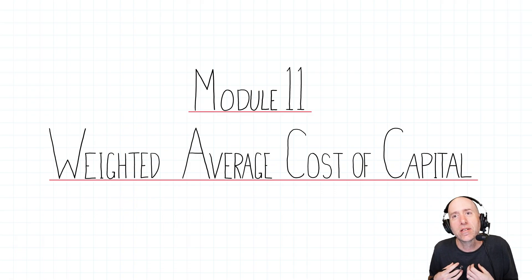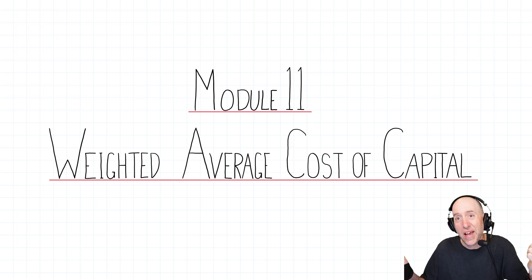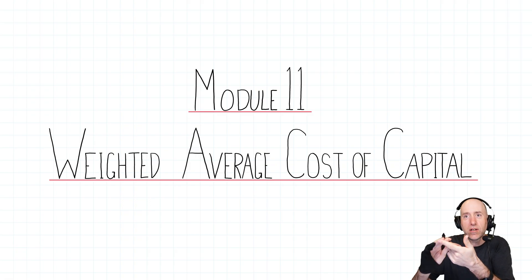Cost of capital means how expensive is it for us to get long-term funding for our projects. If you raise money from shareholders, that has one cost, the cost of equity. If you raise money from debt holders, that has a different cost, cost of debt. The idea is we're going to figure out the company's cost of equity, their cost of debt, and then figure out their overall cost of capital for the company. That's the weighted average cost of capital.